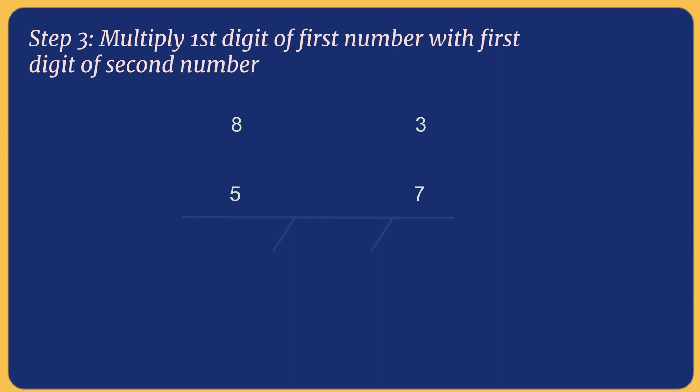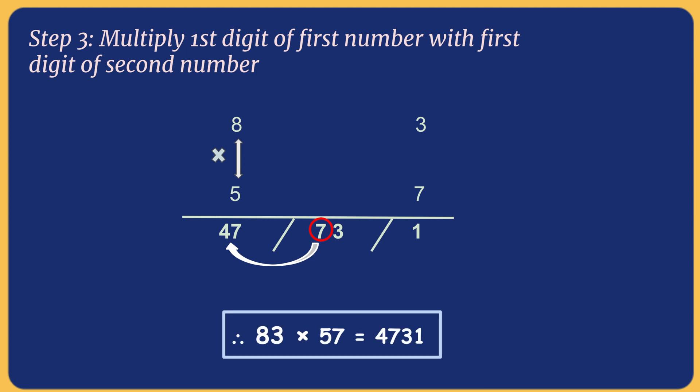Now we'll multiply the first digit of both the numbers resulting in 40. Since we can place only one digit in the tenth place, 7 from 73 is added as a carryover to 40 giving 47. Combining all the terms, we'll get 4731 as the product.